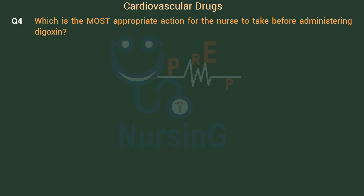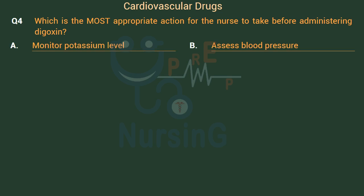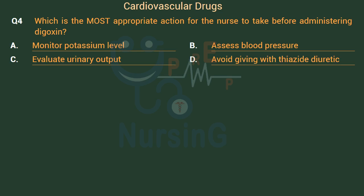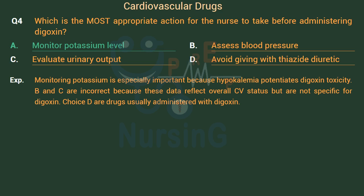Which is the most appropriate action for the nurse to take before administering digoxin? Option A: Monitor potassium level. Option B: Assess blood pressure. Option C: Evaluate urinary output. Option D: Avoid giving with thiazide diuretic. The right answer is Option A: Monitor potassium level. Monitoring potassium is especially important because hypokalemia potentiates digoxin toxicity. Options B and C reflect overall cardiovascular status but are not specific for digoxin. Thiazide diuretics are drugs usually administered with digoxin.